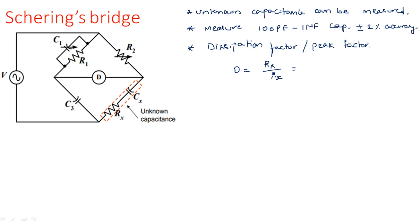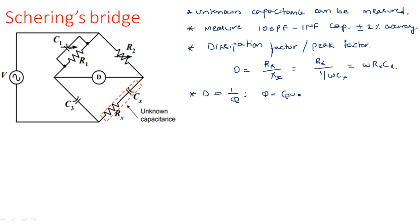The dissipation factor D is equal to Rx divided by the unknown reactance Xcx, which is 1 divided by ωCx. So simply we can write it as D = ωRxCx. The dissipation factor is the reciprocal of the quality factor Q of the capacitor, and we will get Q = 1 / (ωR1C1), so D = ωR1C1.